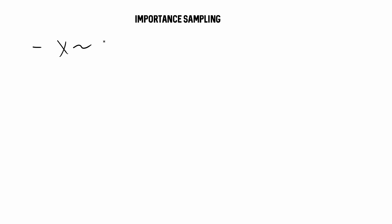In this video I wanted to go over importance sampling with an example and some R code. Importance sampling is a type of Monte Carlo method. You usually use it to estimate some moment of a distribution. You have a random variable x with some distribution and usually you want to estimate some property of the distribution, like the mean or the variance of x, from a target distribution.